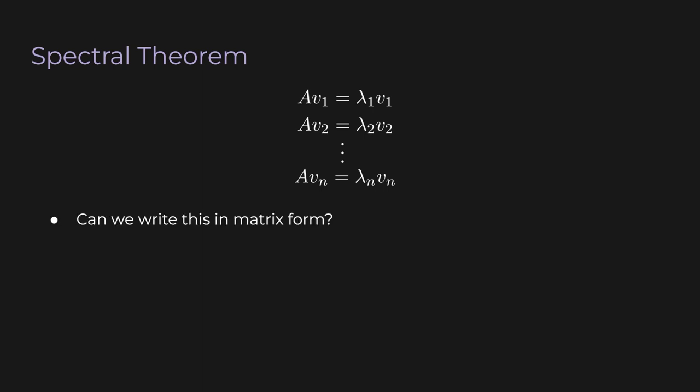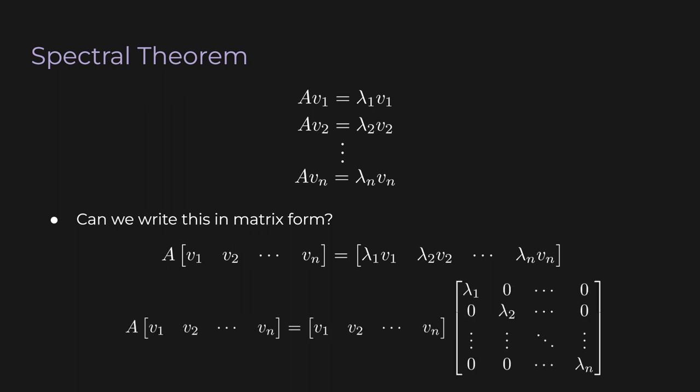So we have n equations. Can we write this in matrix form? Sure. Let's stack all the eigenvectors together, column by column, into one matrix. A times this matrix is another matrix whose columns are the same eigenvectors just scaled by their associated eigenvalues. One clever thing we can do is express the right-hand side as a product of two matrices: the first matrix is just the matrix of eigenvectors, and the second is a diagonal matrix with eigenvalues along the diagonal.